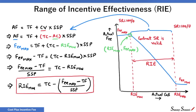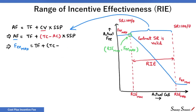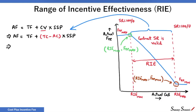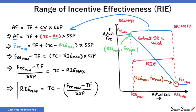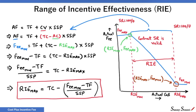We will now move to RIE max, the upper limit of range of incentive effectiveness. First, let's go back to the starting point — the formula for actual fee. When actual cost equals RIE max, the upper limit of range of incentive effectiveness, actual fee equals minimum fee. So we can replace actual fee with minimum fee and actual cost with RIE max. Solving further, we get the formula for RIE max. The formulas for RIE max and RIE min are quite similar, with one major difference: the RIE max formula has minimum fee, but the RIE minimum formula has maximum fee.